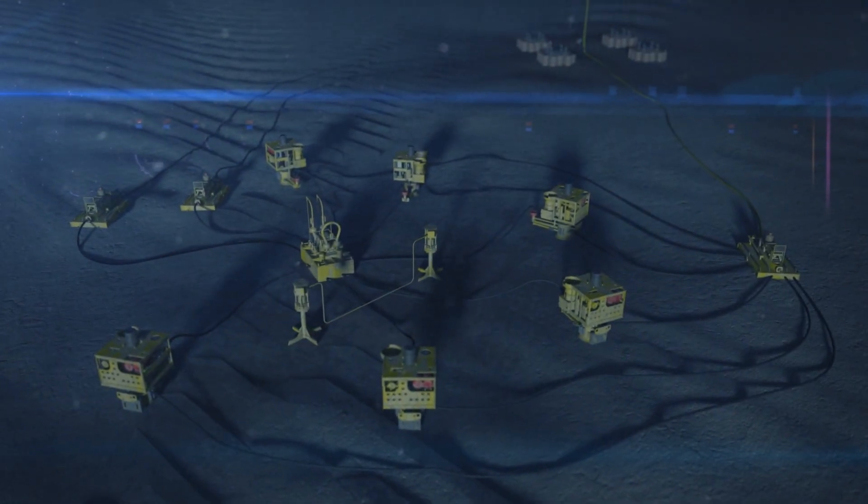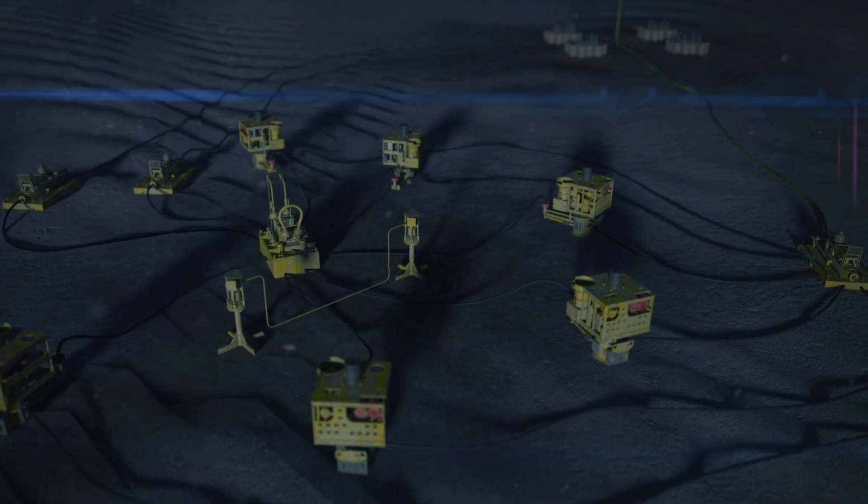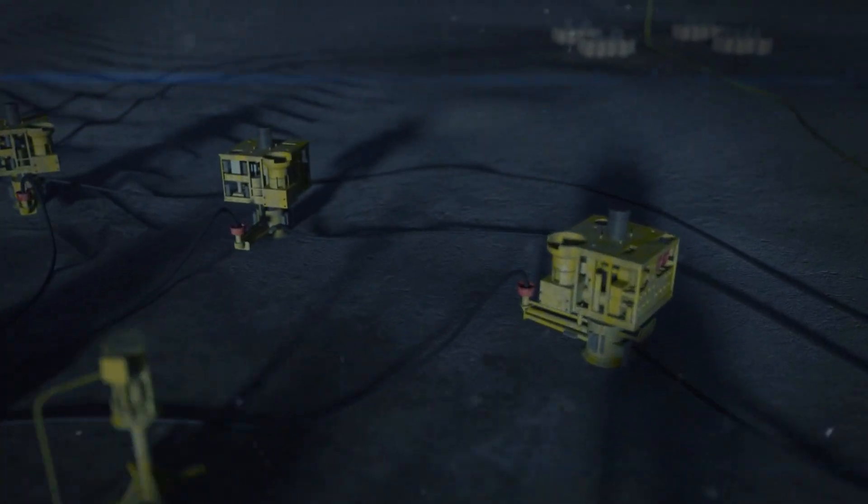In a typical deep water production project, subsea wellheads are clustered together and connected or tied back to a platform or host floating production storage and offloading vessel, or FPSO, through flow lines and a manifold.